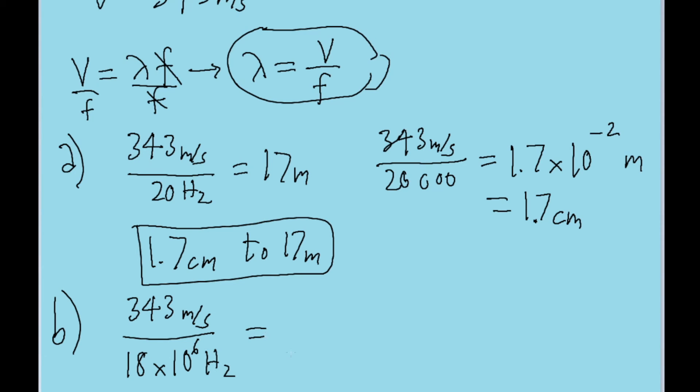And if we put this into our calculator, then we find a very small wavelength of 1.9 times 10 to the power of negative 5 meters. So the moral of the story here is that the higher the frequency is, the lower the wavelength is.